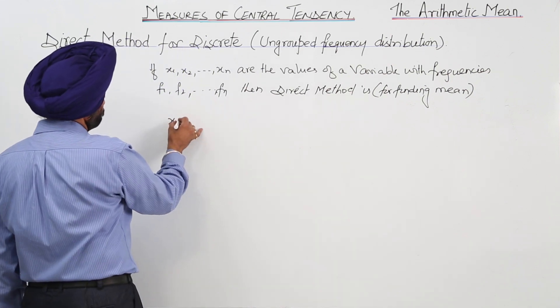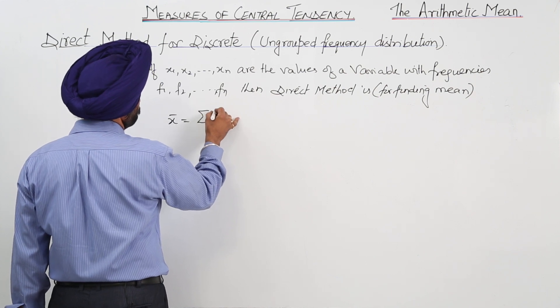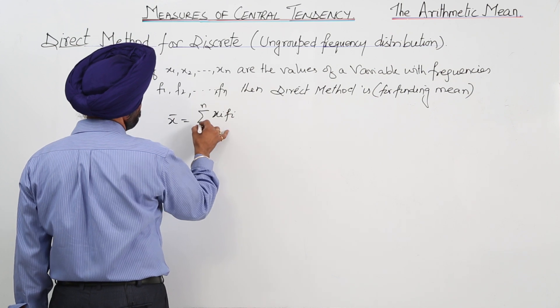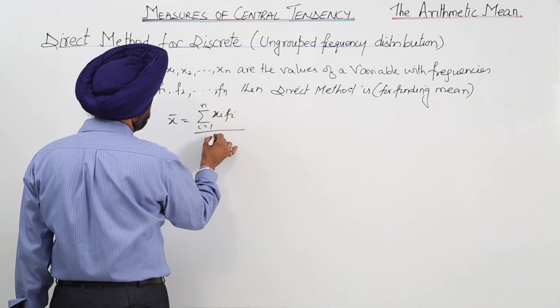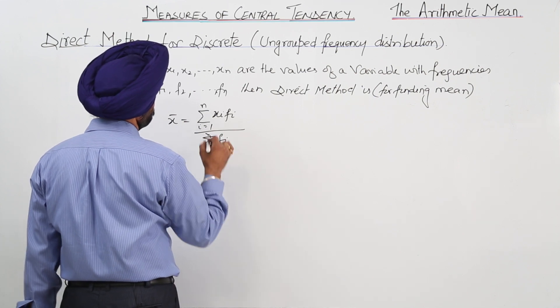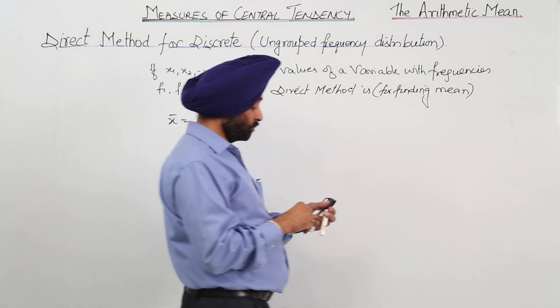x mean is summation xi fi divided by summation fi. So this is the direct method we are going to use. Now let me give you an example.